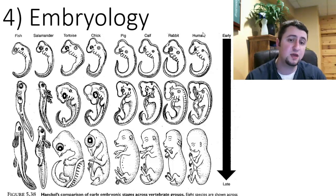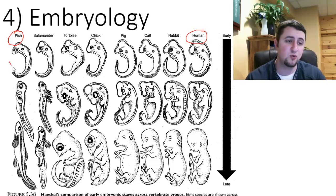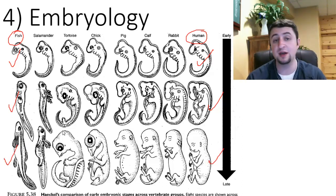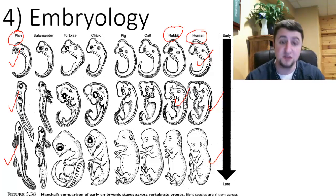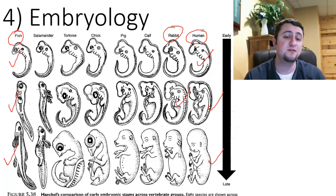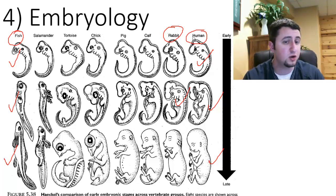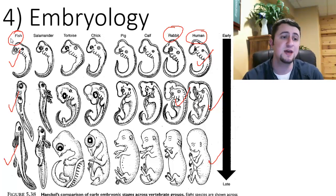For example, let's compare the embryos of a human and a fish. At step one, they look very, very similar. At step two, we're starting to see some differences. Then step three — a lot of different-looking adult forms. Now let's compare a human and a rabbit. Very similar at first, still very similar at the second stage of development, and still kind of similar at the third stage. But a human and a rabbit eventually look very different as adults. That indicates that a human and a rabbit are much more closely related on the family tree — they have a closer common ancestor than, say, humans and fish.